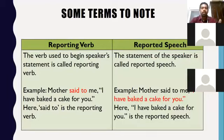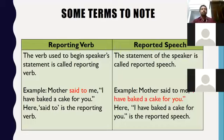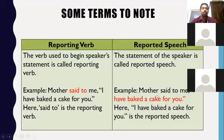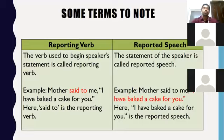In any direct speech or indirect speech, there are two things: one is reporting verb, another is reported speech. The verb used to begin the speaker's statement is called reporting verb — for example, 'said to' in 'Mother said to me, I have baked a cake for you.' The statement of the speaker is called reported speech — the highlighted part 'I have baked a cake for you' is an example of reported speech.